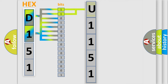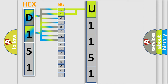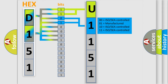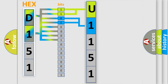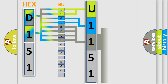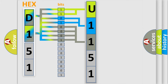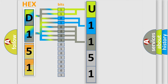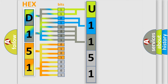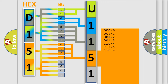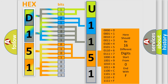By combining the first two bits, the basic character of the error code is expressed. The next two bits determine the second character. The last four bits of the first byte define the third character of the code. The second byte is composed of a combination of eight bits: the first four bits determine the fourth character of the code, and the combination of the last four bits defines the fifth character.